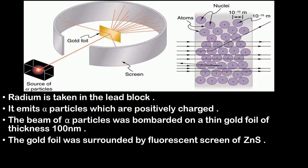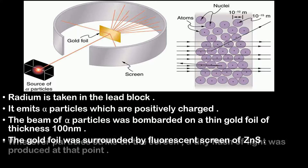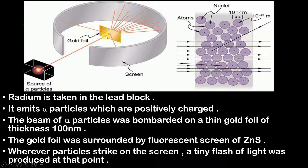When these alpha particles pass through the gold foil and hit the zinc sulfate screen, they will create a tiny flash of light on the zinc sulfate screen — wherever they hit, a tiny flash of light is created. I hope you have understood the construction. Now let us understand its observations.